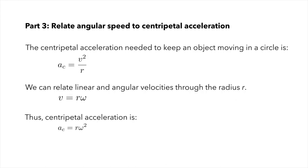In part three of the lab, we will be relating the angular speed to the centripetal acceleration that an object feels. We know from earlier that the centripetal acceleration needed to keep an object moving on a circular path is given by v squared over r, where v is the speed and r is the distance from the axis of rotation. We can relate linear and angular velocities through the quantity r. We know that on circular motion, the speed that an object is traveling around the circle is equal to r times omega, where omega is that angular velocity.